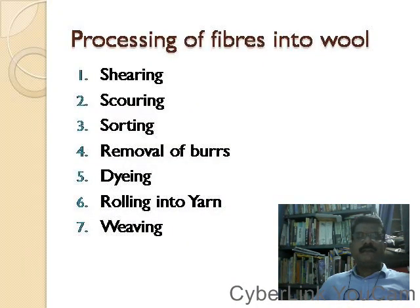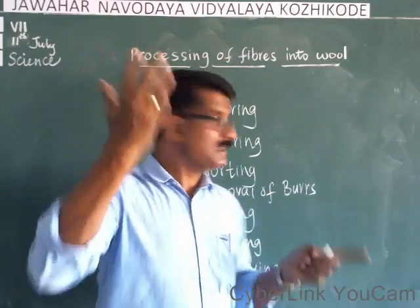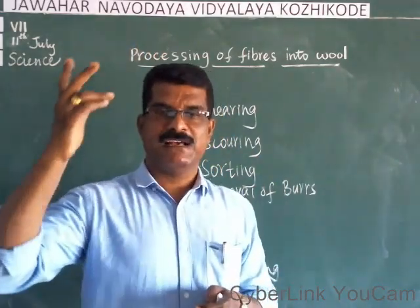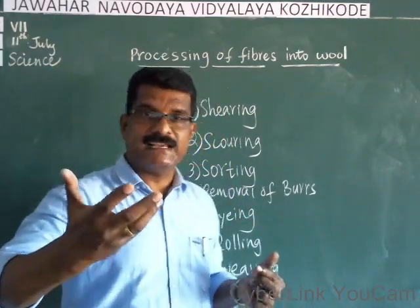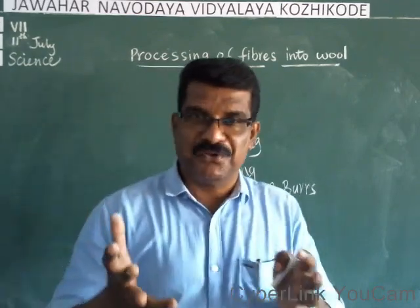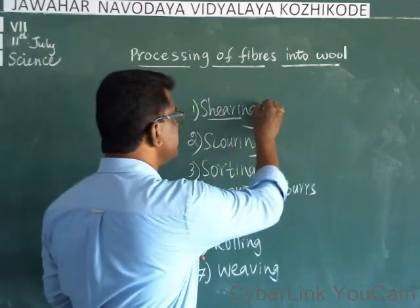The different steps are: shearing, scouring, sorting, removal of burrs, dyeing, rolling into yarn, and weaving. These are the different steps involved in the processing of fibers into wool. Now let us look at the first step — shearing.